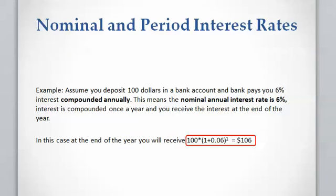Let's work on an example. Assume you deposit $100 in an imaginary bank account that gives you 6% interest rate compounded annually. So nominal interest rate is 6% compounded annually. The interest rate of 6% is compounded once a year, and you will receive interest and the principal at the end of year 1, which equals $106.